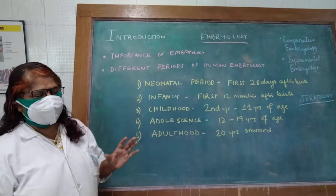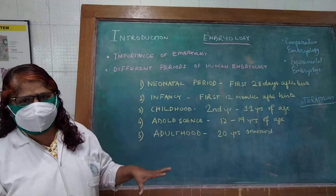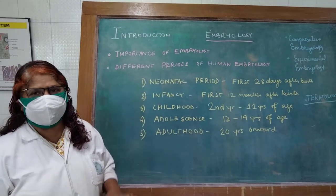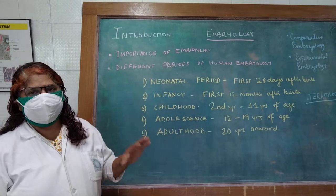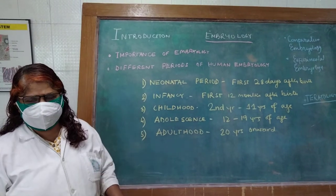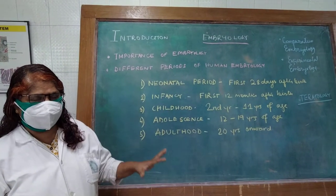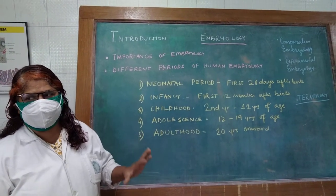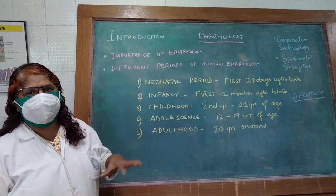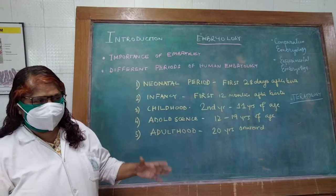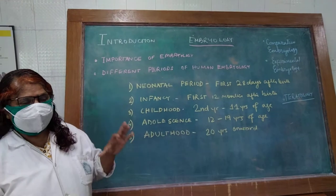Special embryology deals with the development of the different systems of the body — the cardiovascular system, urogenital system, and central nervous system. These are the different systems of the body which perform the main physiological functions of the body, and the study of their development is called special embryology.